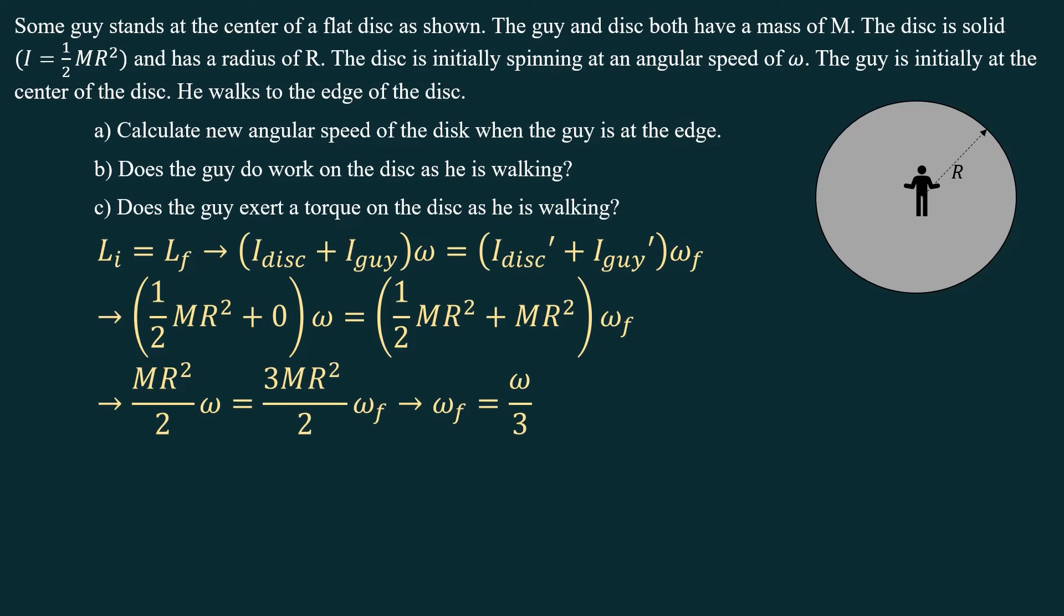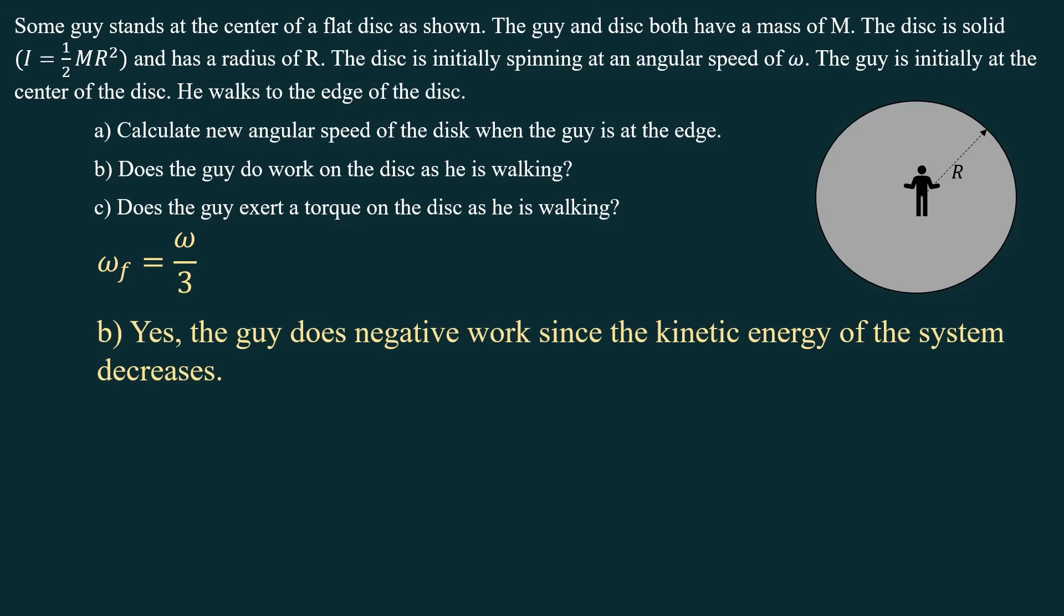Okay, part B, does the guy do work on the disk as he's walking? Well, one of the most important formulas in physics, work equals delta K. Delta K certainly changed. So yes, he did work. He did negative work on the disk. So in that case, the disk slowed down, which means the guy did negative work.